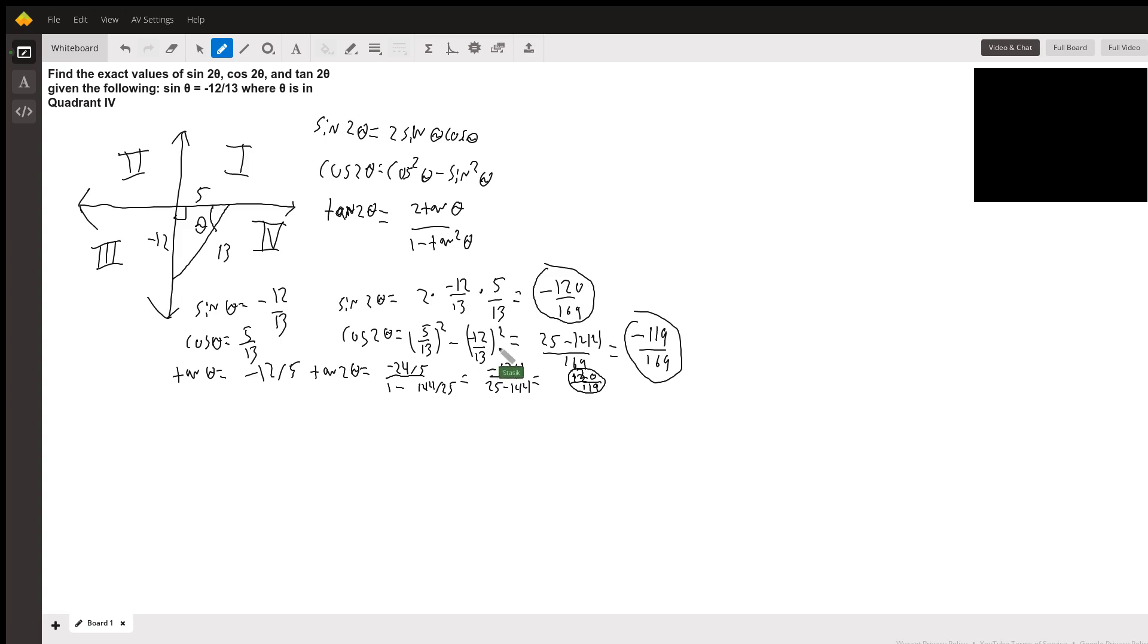This equals 25/169 - 144/169 = -119/169. Similarly, we can plug in -12/5 into the tangent formula to get tan(2θ) = 120/119.